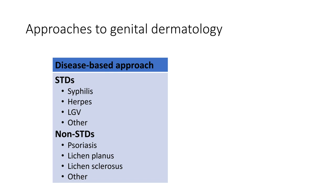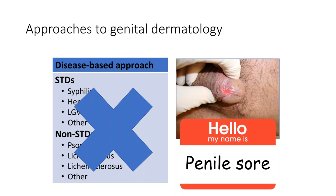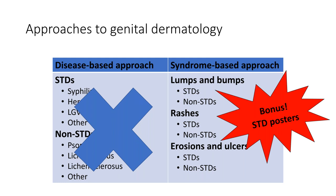One approach to genital dermatology is the disease-based approach — going through STDs like syphilis, herpes, LGV, and non-STDs — but that assumes the disease presents itself clearly. In practice, we get a syndrome: 'hello, my name is penile sore,' and it's up to us to figure out what's going on. So I'm going to take a syndrome-based approach, talking about lumps and bumps, rashes, and erosions and ulcers, presenting photos first and asking you to think about the diagnosis.